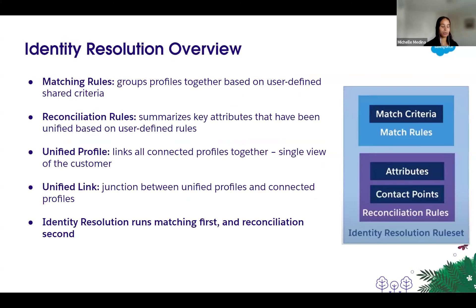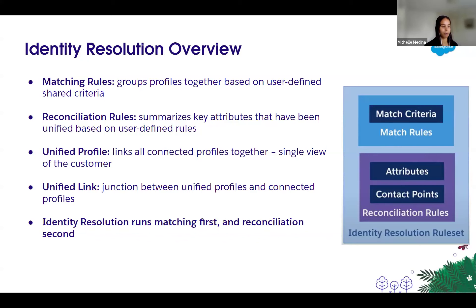A quick identity resolution overview. Identity resolution is a two-fold process. The first step is to run those matching rules — it looks across all the different attributes, contact points, and identifiers for individuals, and that creates the unified profile. From there, it runs through the reconciliation rules that we configure, defining the attributes that will represent the unified profile. A unified profile is that single view of the customer — the record that links all the profiles together. The unified link is a junction between the unified profile and the connected profile.